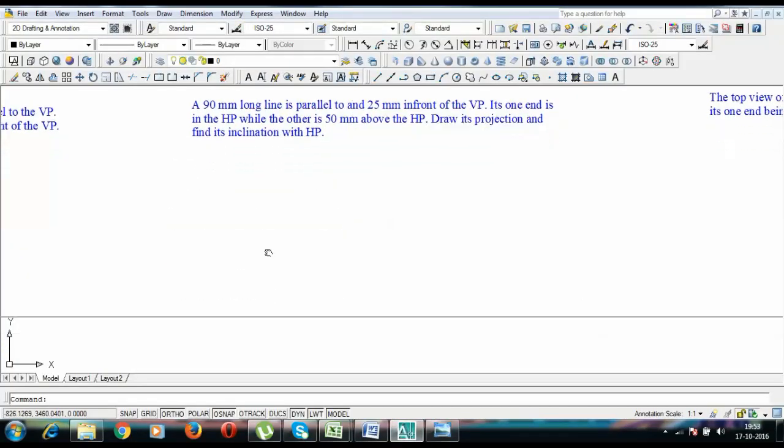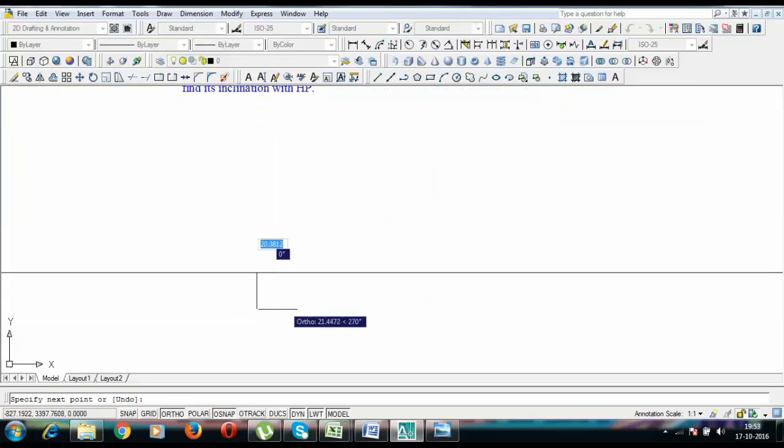Initially what we're going to do is we're going to write over here. This is going to be point A. And since it is parallel to VP and 25mm in front of VP, the whole line, each and every point on that line is going to be 25 in front of VP. So this is going to be 25.